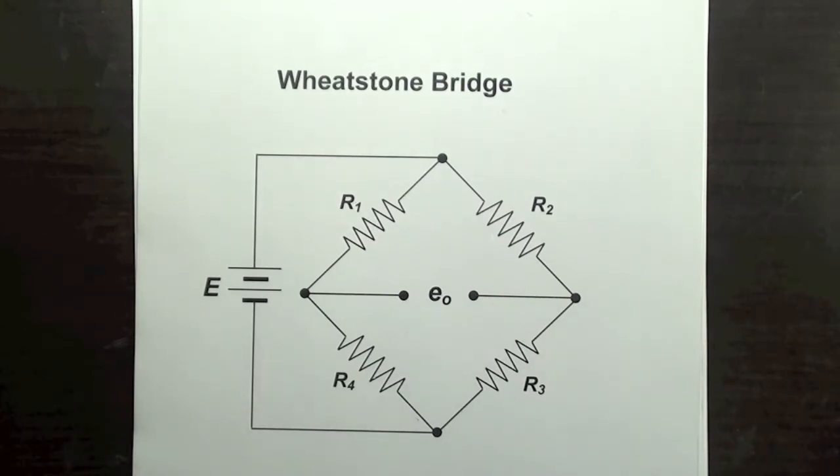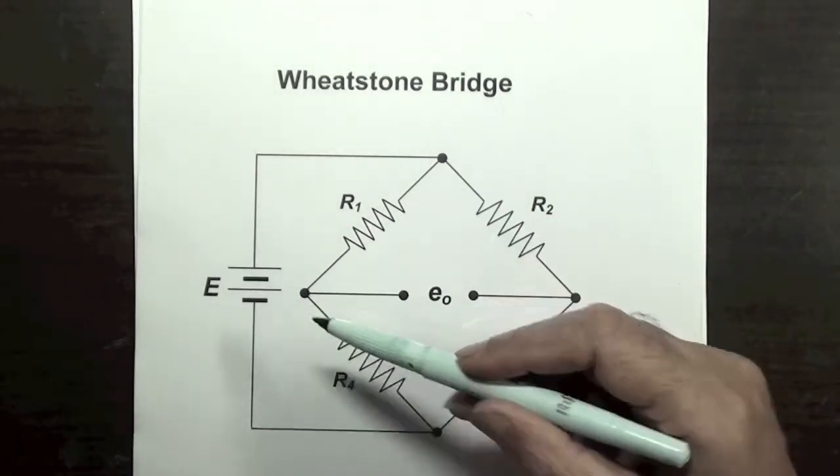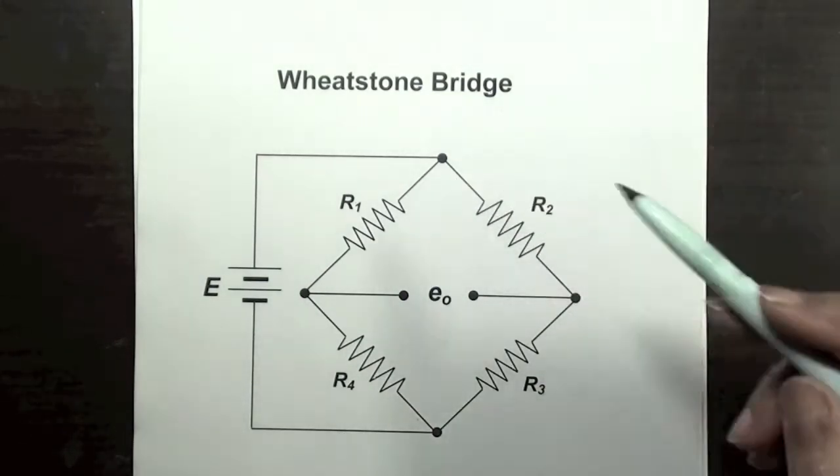the most popular circuit used is a Wheatstone bridge. This is a simple network of four resistors connected end to end to form a square having four corners.